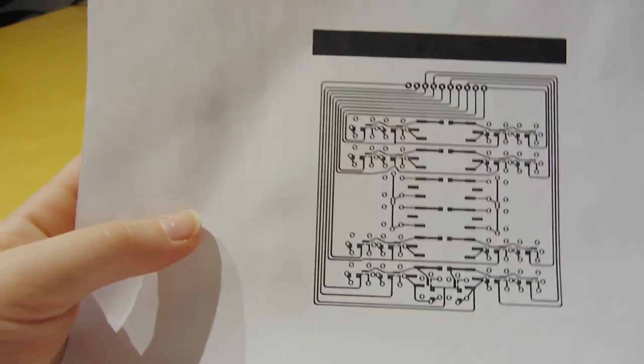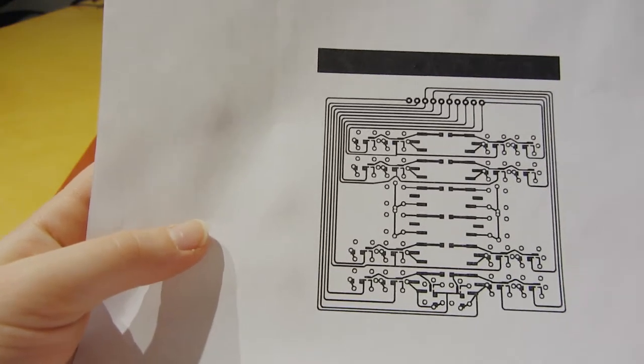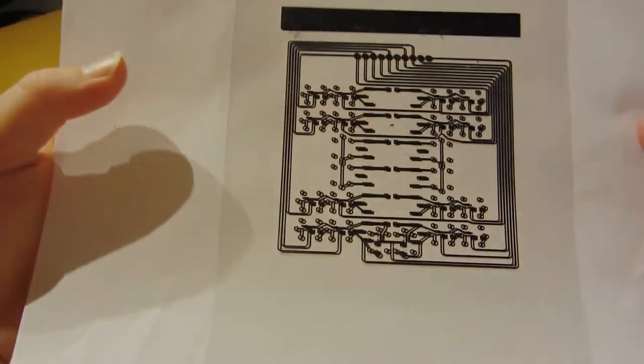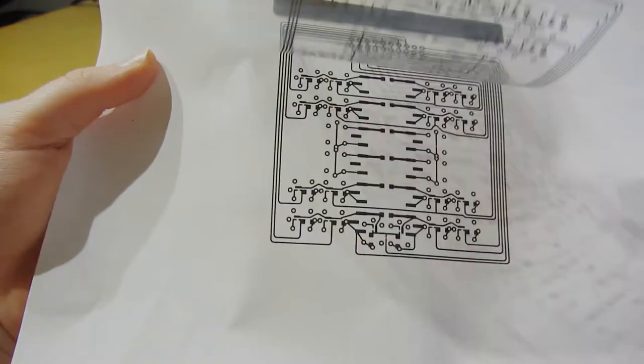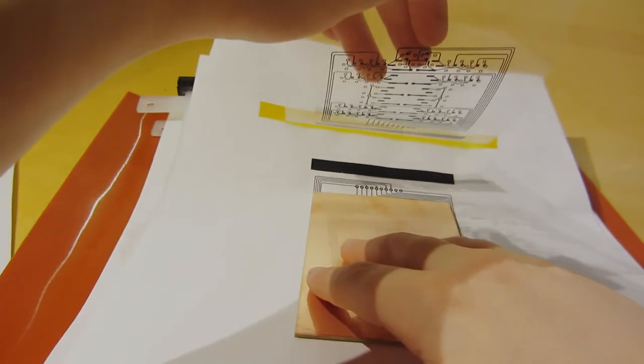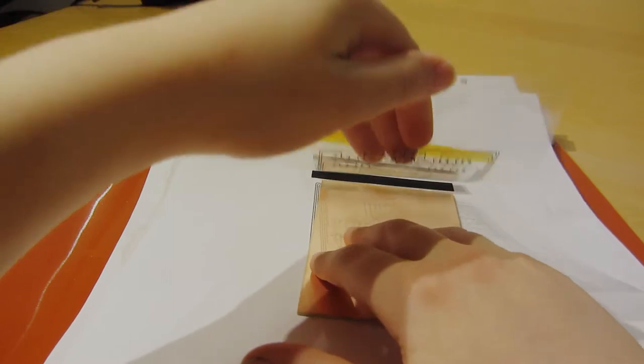First we need to print the Gerber on a piece of paper. Then we need to print it on this transparency film. And then we need to put this board between the transparency film and the paper, and line it up to the traces.